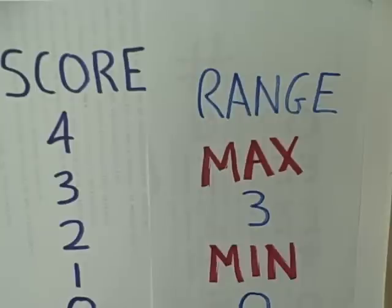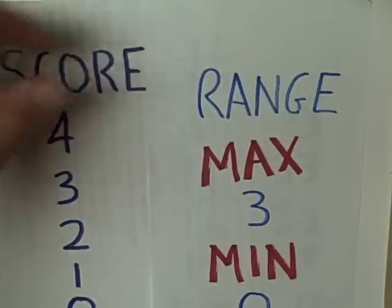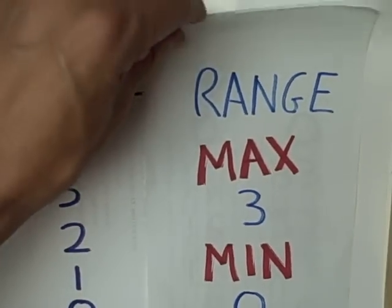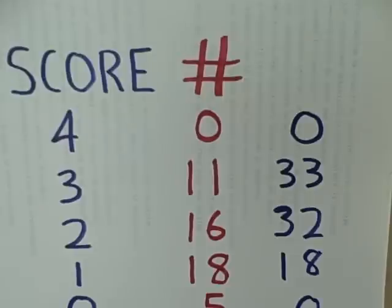But remember, no one really got all four correct, so no one got a perfect score of four. That means that our actual observed range involves a minimum of zero and a maximum score of three. And therefore, all of our measures of central tendency must be within this range of zero to three.